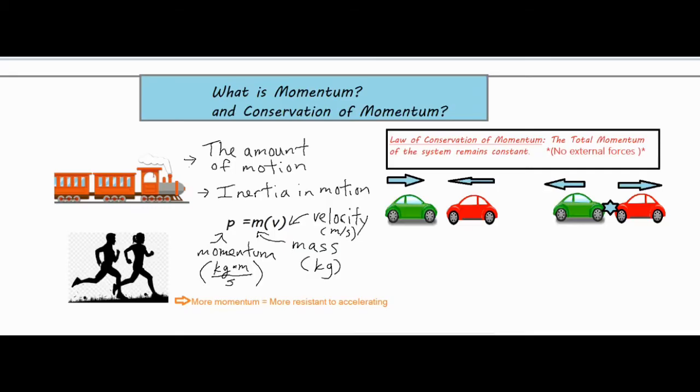As you're taking a look at momentum and the amount of motion something has, the way to roughly measure it is the more momentum something has, it's more resistant to accelerating. Basically saying how hard it is to make it slow down or change direction is a pretty good indicator of how much momentum something has.